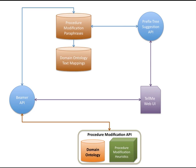The following diagram gives an overview of the TellMe architecture. The TellMe web UI is the interface between the TellMe system and the user. The system consists of three main APIs: the Suggestion API, the Beamer API, and the Procedure Modification API.